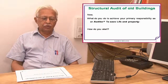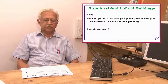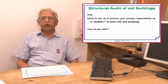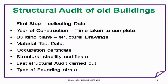What do you do to achieve your primary responsibility as an auditor — to save life and property? How do you start? First step: collecting data. Year of construction, time taken to complete, building plans, structural drawings, material test data, occupation certificate, structural stability certificate, last structural audit carried out, and type of foundation strata.